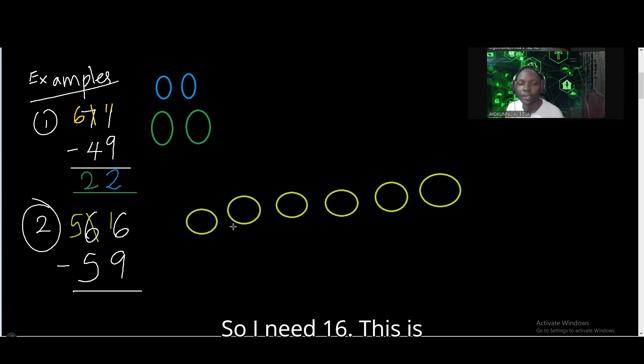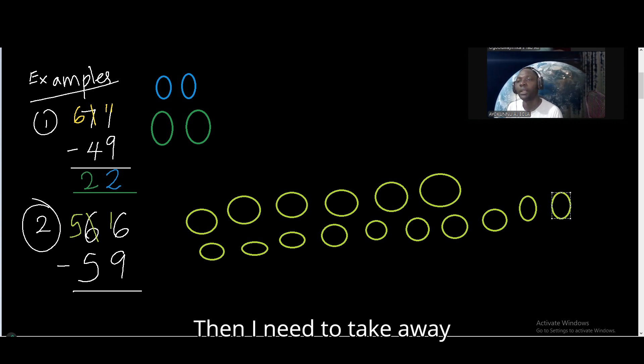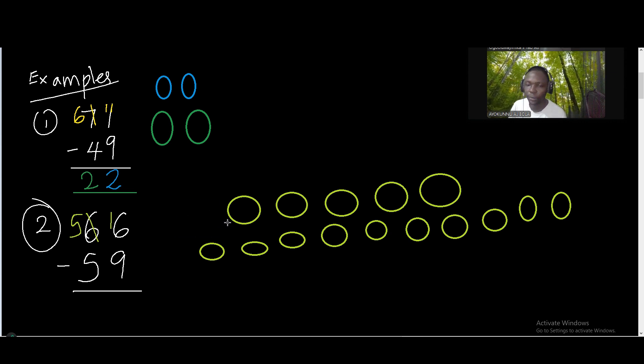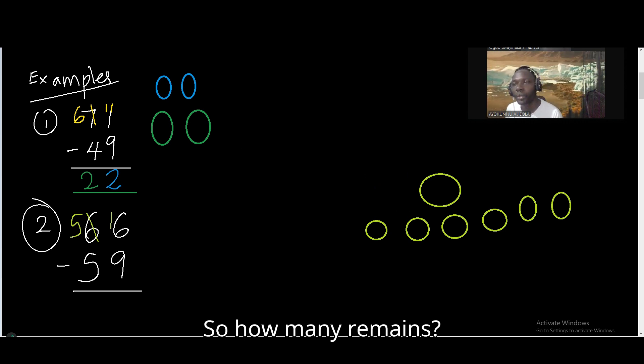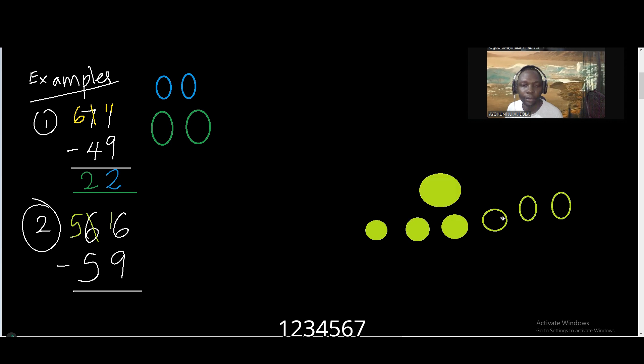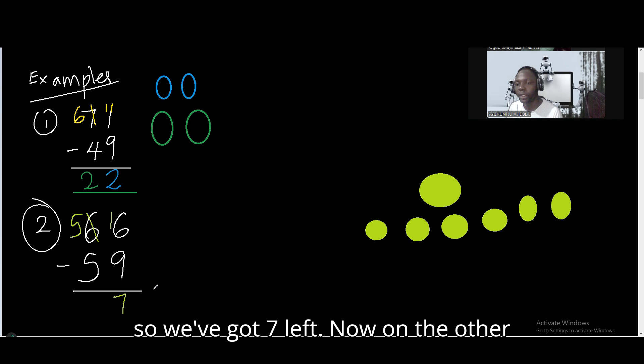So I need 16. This is 6. Now 7, 8, 9, 10, 11, 12, 13, 14, 15, 16. Then I need to take away 9. So let's take away 9. 1, 2, 3, 4, 5, 6, 7, 8, and 9. So how many remains? 1, 2, 3, 4, 5, 6, 7.